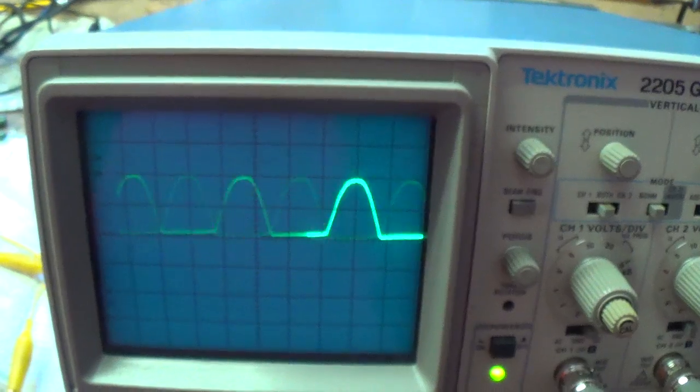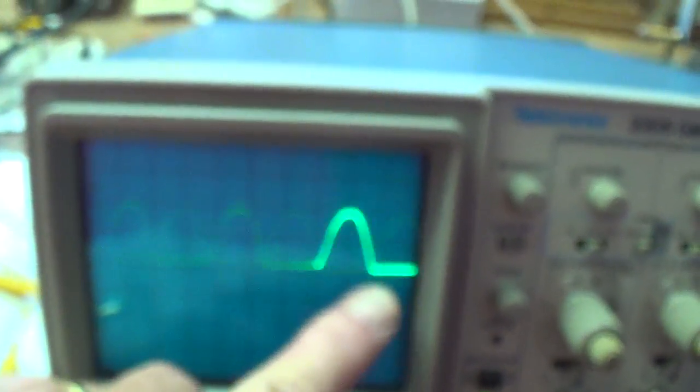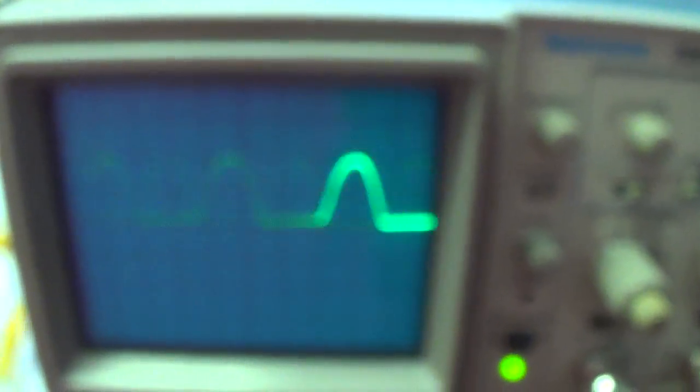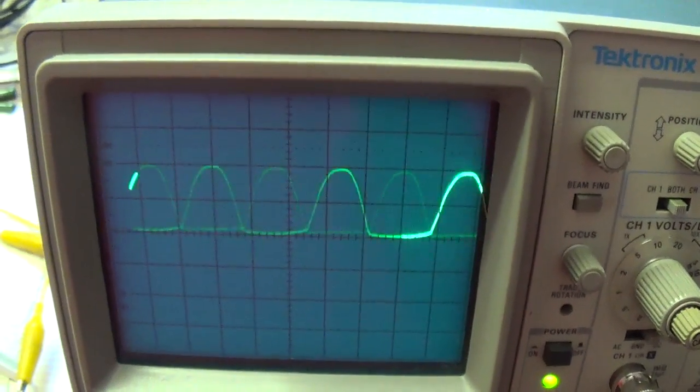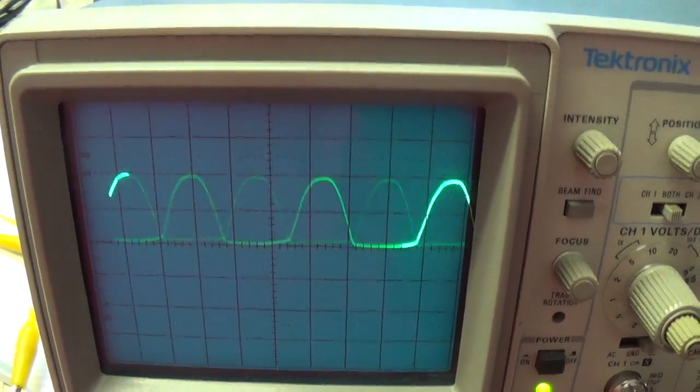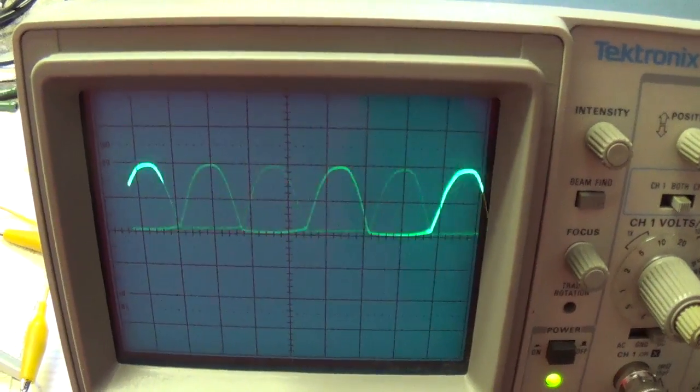And now when I superimpose the two waves with a common base axis you can see that each one fills in the voids in the other and we have a rippled DC output of 10 volts peak.